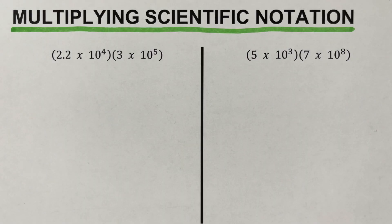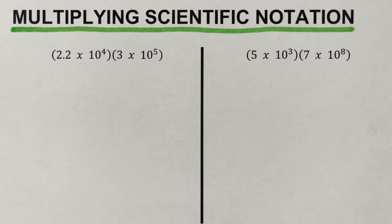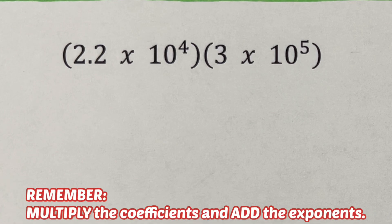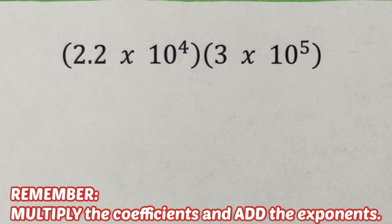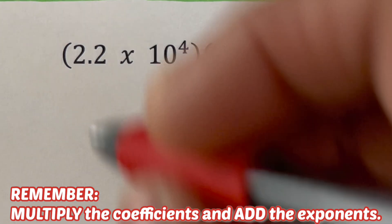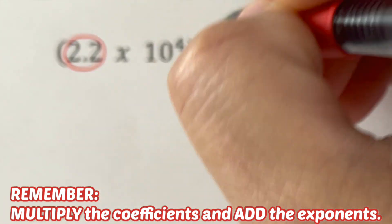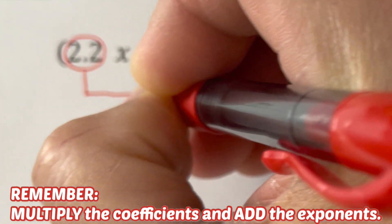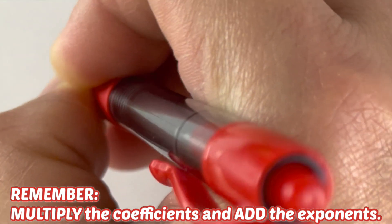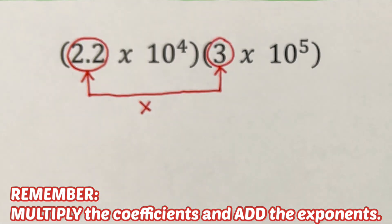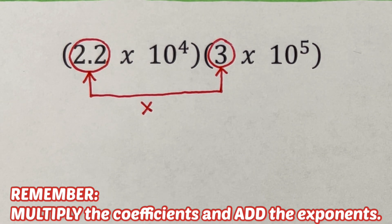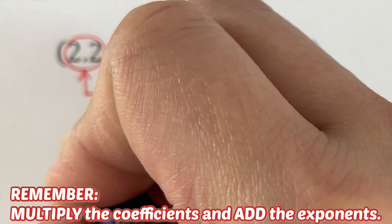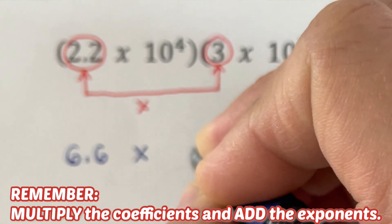Let's use the rules we've established to find the product of these two expressions. The basic rule is to multiply the coefficients and add the exponents. In this case, we are going to multiply 2.2 and 3. So 2.2 times 3 is 6.6. We write that down as 6.6 times 10 to the power...